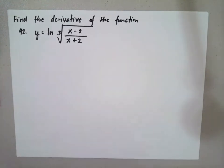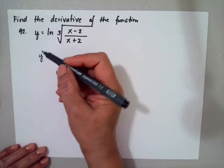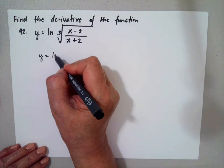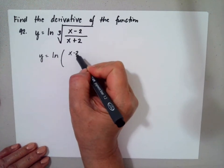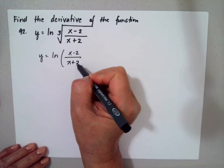We can simplify this using the properties of natural logarithms. We have ln of x minus 2 over x plus 2 to the 1 third.